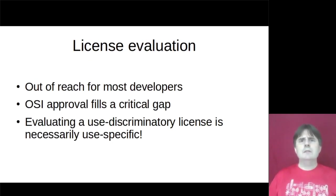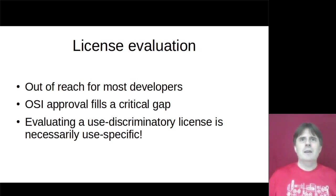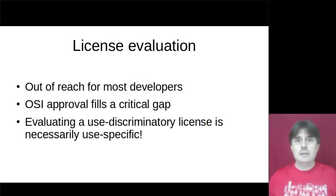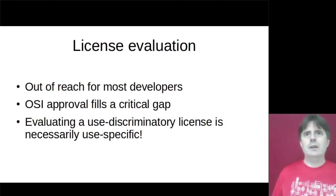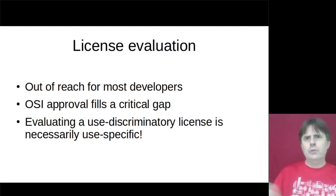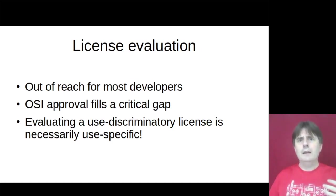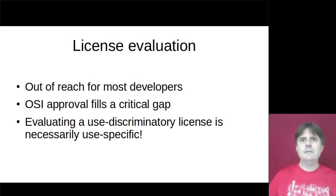A smaller harm is licence evaluation. This is a really important service that OSI performs because it's out of reach for most developers and because there's a benefit in a small set of consensus licences. A use discriminatory licence from the outset is necessarily use-specific in its evaluation, because OSI doesn't know what developers are doing, let alone what end users are using. So whatever gains might be pursued by seeking use discriminatory licensing need to weigh against, amongst other things, destroying or devaluing this most basic of things that OSI does.